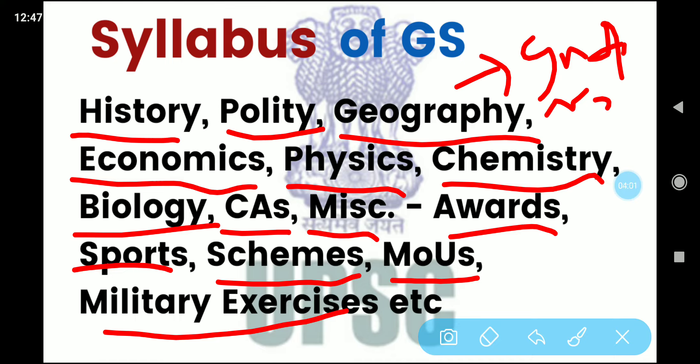You need to prepare all these topics. For science — Physics, Chemistry, and Biology — you should go through important papers and important questions. You can also take some GK books. For miscellaneous topics like Awards and Sports schemes, you need to be aware of current topics from the last six to nine months of current affairs.